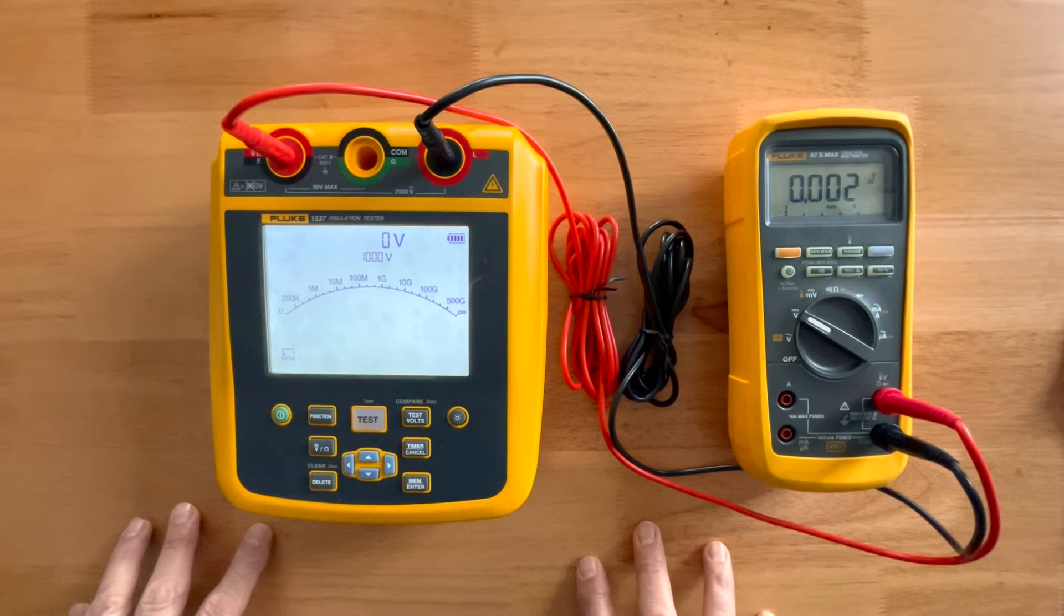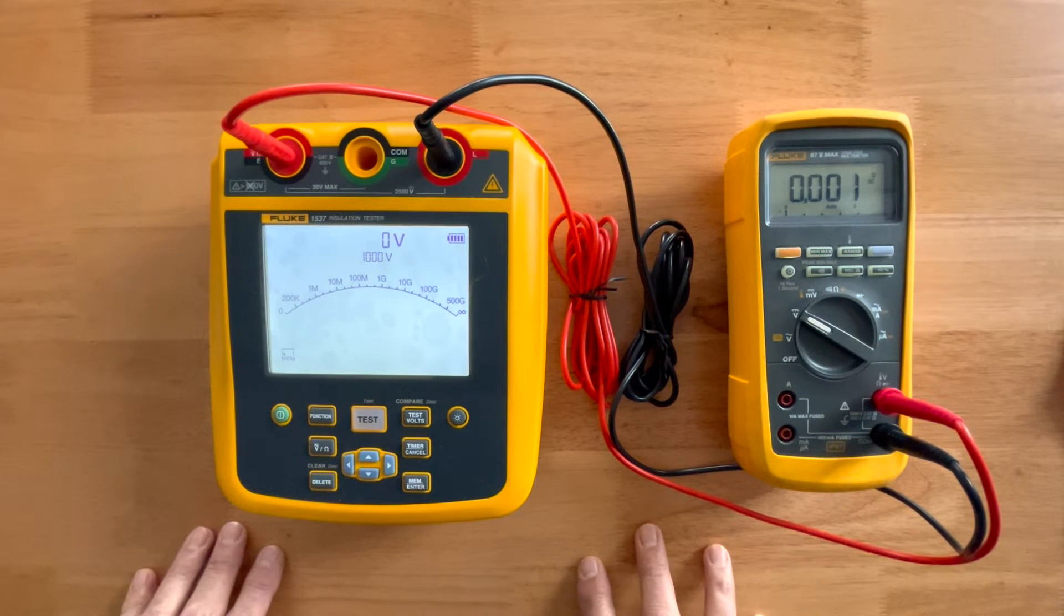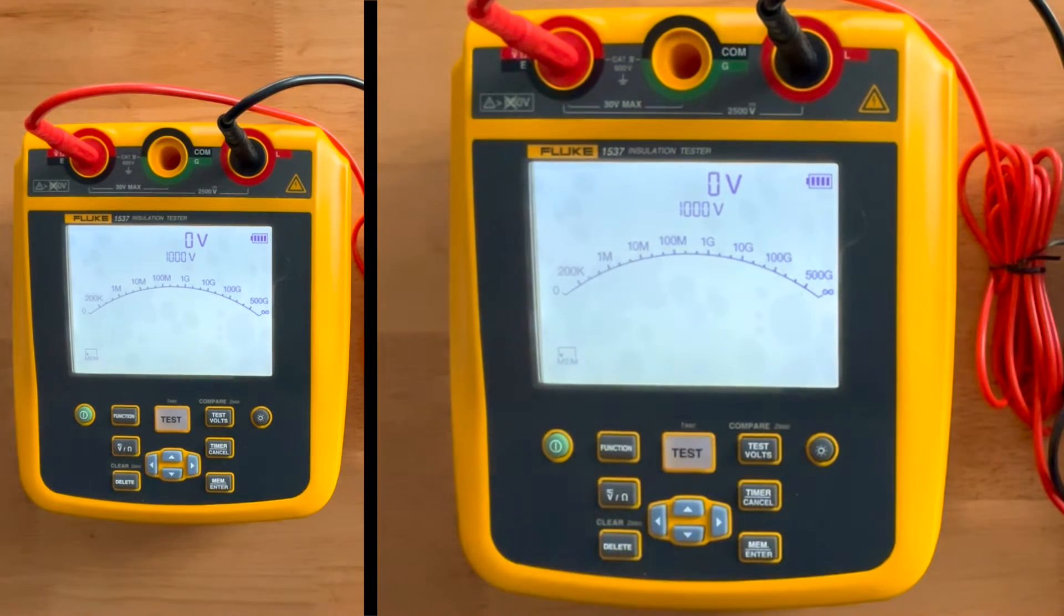We're now going to be taking a closer look at the Fluke 1537. With all your key functions being displayed, obviously you have a battery indicator up here. We have the voltage we're actually outputting, the range that we're going to be outputting. And we have an analog and digital display. So for those who grew up using an analog insulation tester, we have the ability to show you both at the same time.